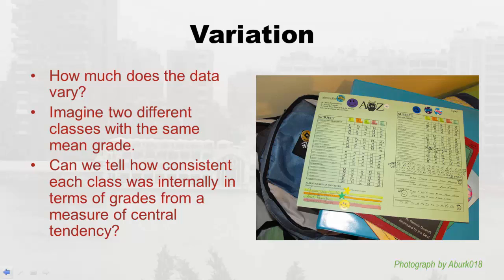When you're talking about quantitative data and you do measures of central tendency like mean, median, and mode, it doesn't tell the whole story. You have to also add on the information about variation. These calculations we're going to learn are ways to express how much the data vary in the data set — separate from central tendency. You need to know both before you can really evaluate your data.